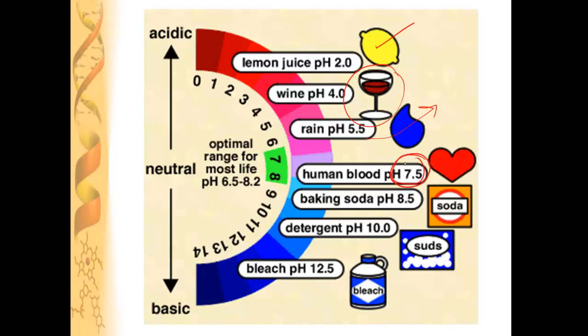Human blood is actually slightly basic. It's over 7. So a pH of 7 is neutral. And if you're above 7, you're slightly basic. If you're well above 7, like bleaches, you're very basic.